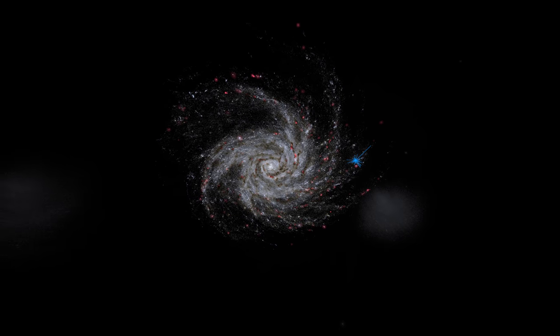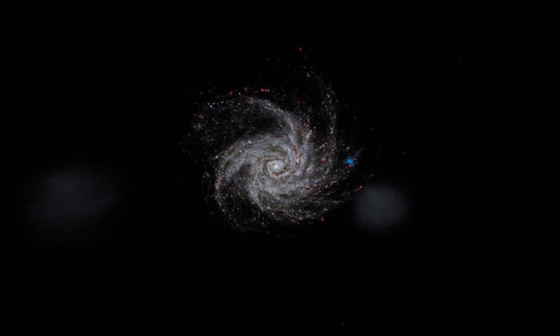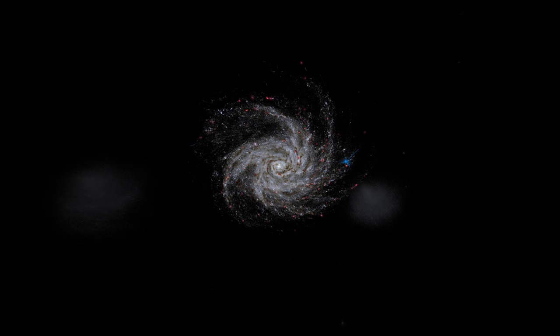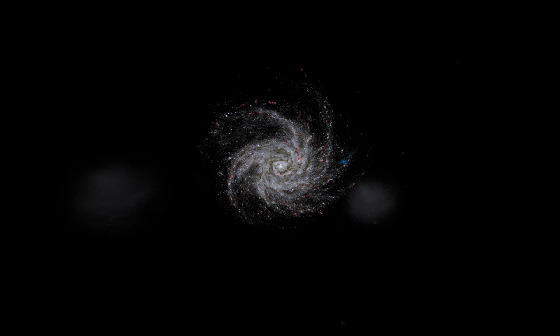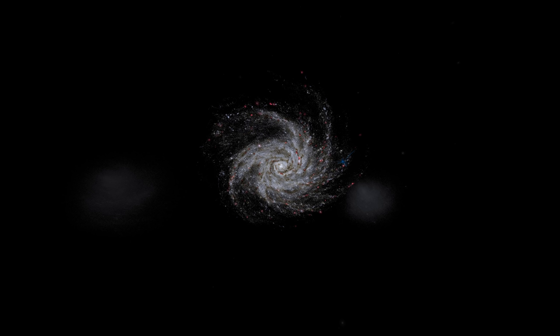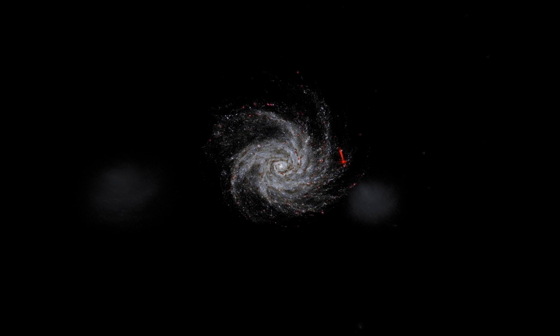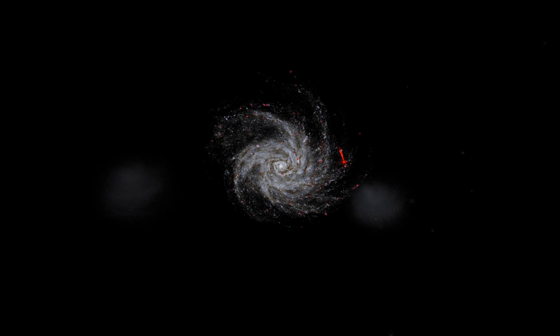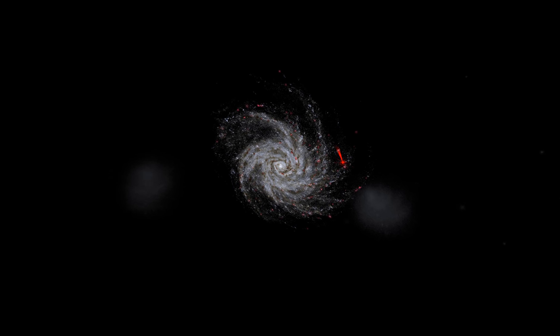Since the discovery of the first exoplanet 51 Peg B, nearly 5,000 other exoplanets have been discovered. Each dot seen here corresponds to an observed exoplanet. So far, most of these exoplanets have been observed in the neighborhood of the Sun.